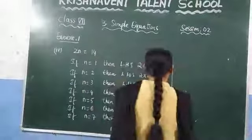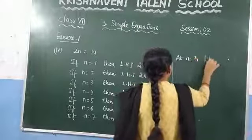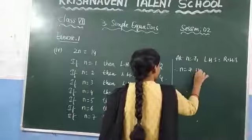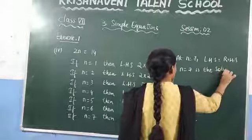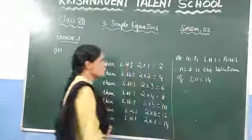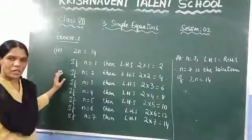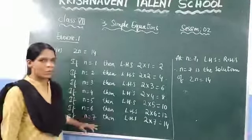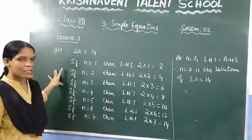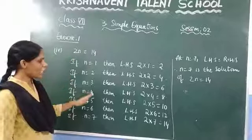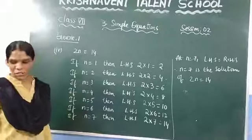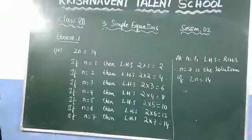At N equal to 7, the LHS and RHS are both 14 and therefore equal. So we can say that N equal to 7 is the solution of the equation 2N equal to 14. In the trial and error method, you put different values of N and check at each stage whether LHS equals RHS. That is the value of the solution. This stage of the exercise is now complete.